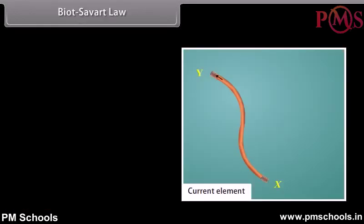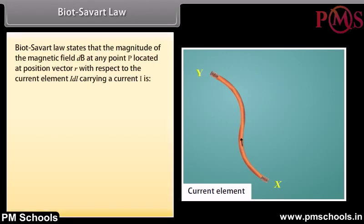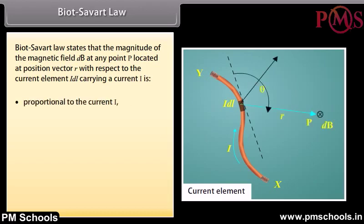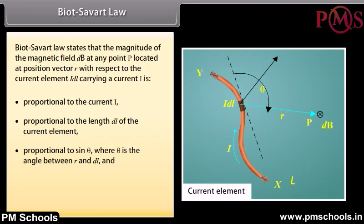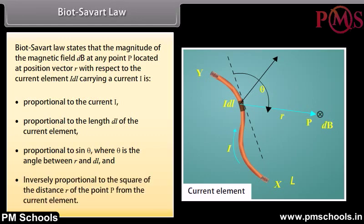Biot-Savart law is a mathematical description of the magnetic field at a point arising from a current element. It states that the magnitude of the magnetic field dB at any point P located at position vector R with respect to current element I·dL is: proportional to current I, proportional to length dL, proportional to sinθ (where θ is the angle between R and dL), and inversely proportional to R².